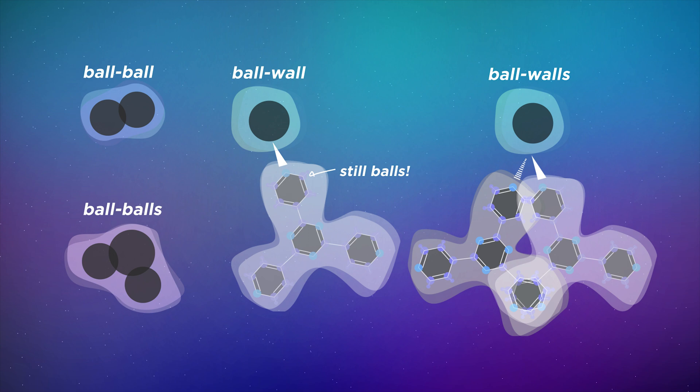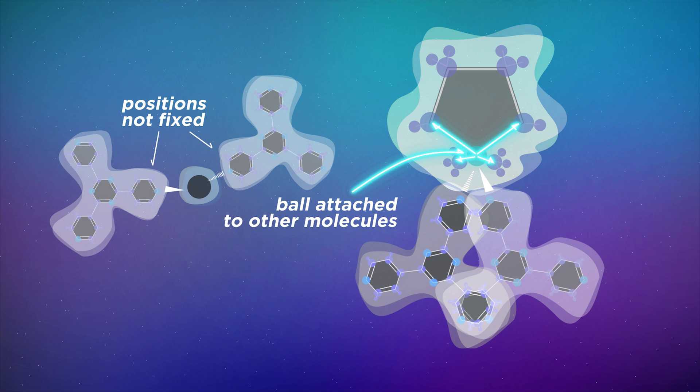More importantly, we can make sure these structures form by having our ball molecule bonded with other molecules. So the only spots our wall molecules can bond to are these.